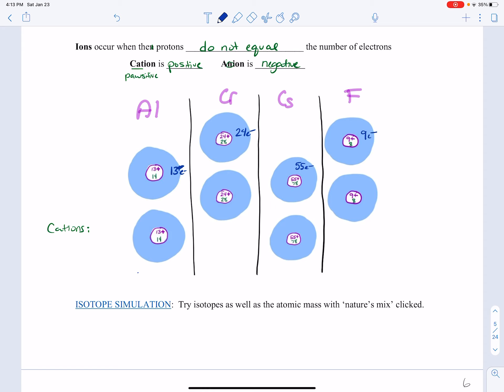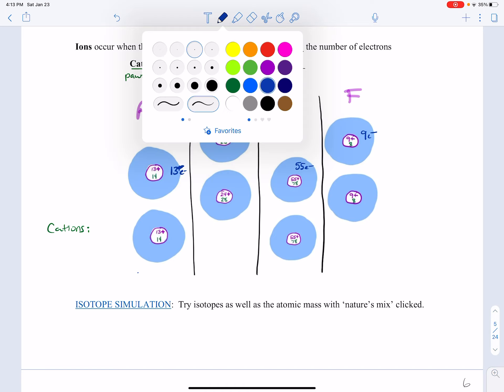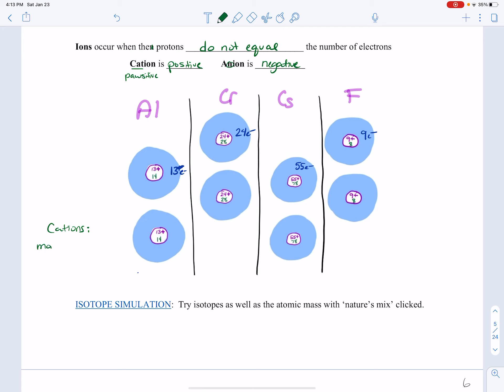Now we want a cation. So that means to be positive, that means that you're going to have to have more protons, because those are positive, than electrons. Because remember, they start off even. So you're going to have to increase something or decrease something. So to make a cation, we need to write down a number that has more protons than electrons.